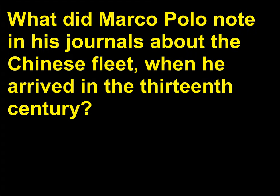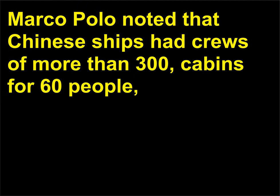What did Marco Polo note in his journals about the Chinese fleet when he arrived in the 13th century? Marco Polo noted that Chinese ships had crews of more than 300, cabins for 60 people, and four sailing masts.